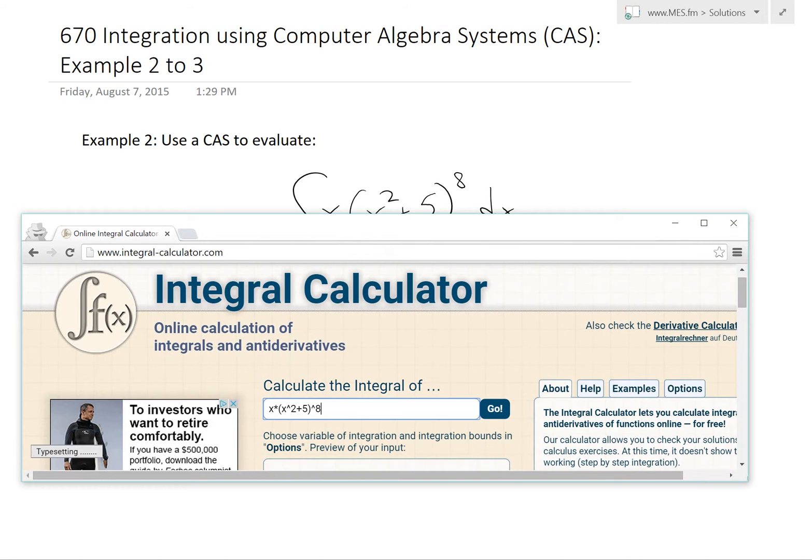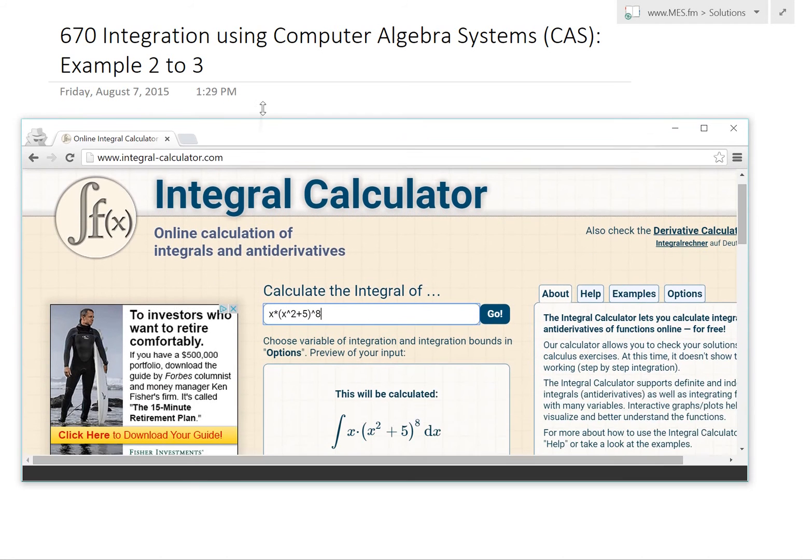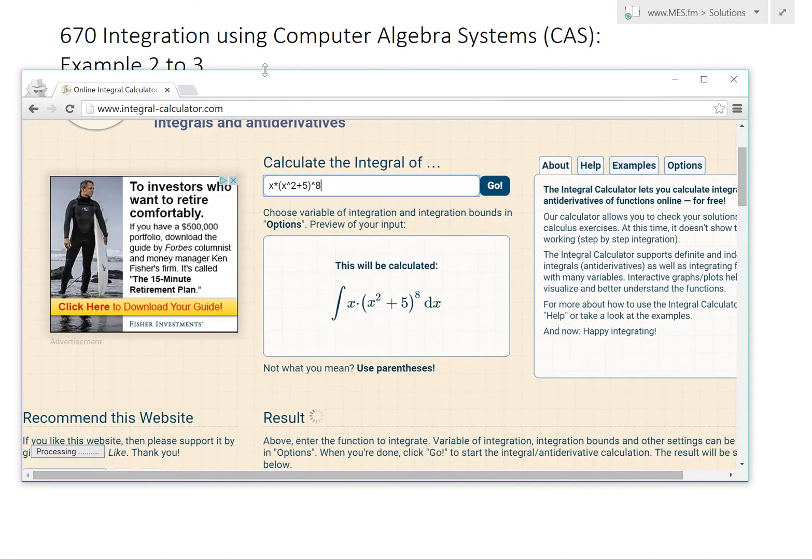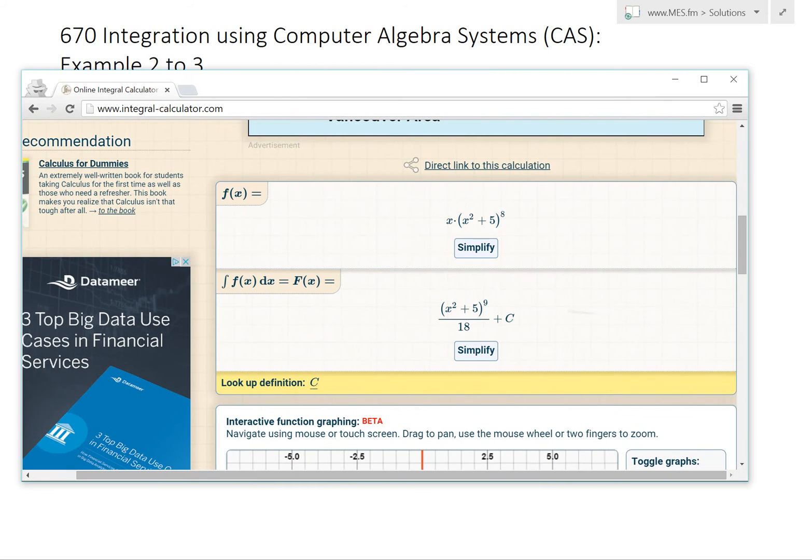And write this equation in here: x times x squared plus 5, and then power of 8. Scroll this up, press Enter.